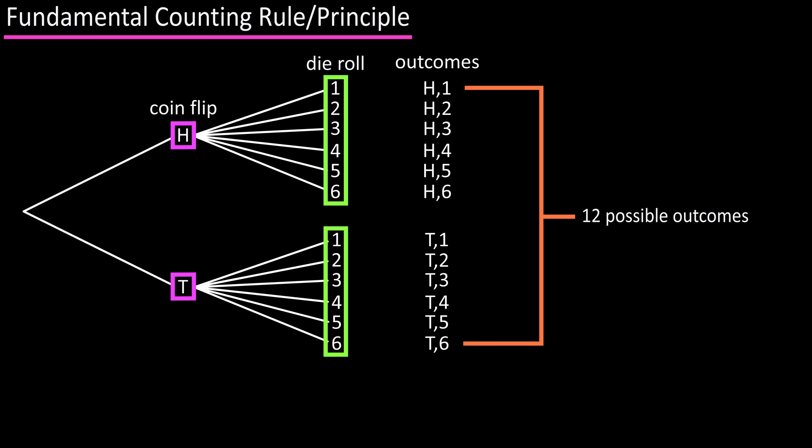Using the fundamental counting rule, with the coin flip as event one and the die roll as event two, we have two possibilities for the coin flip and six for the die roll. So two times six equals twelve. Same result as the tree diagram.